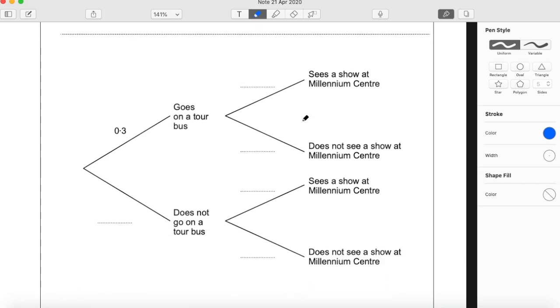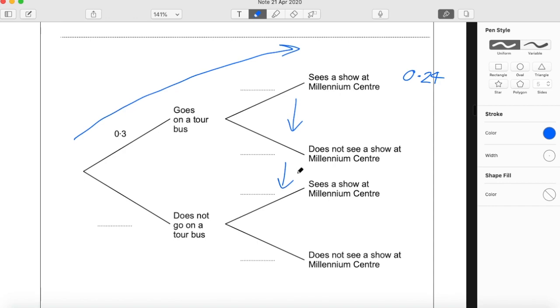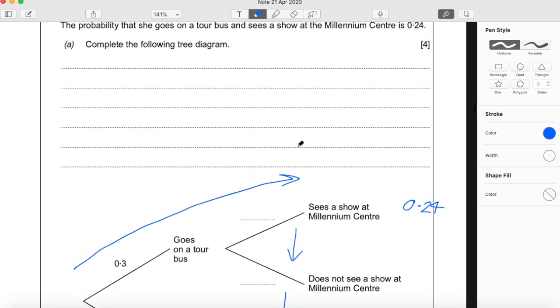So we're given this tree diagram down here. We're told that the probability of her going on a tour bus and seeing a show at the Millennium Centre is 0.24. Remember, we multiply down the tree or through the branches of the tree and we add vertically along. So I'll just show what I mean by that here. So 0.3 times by some number x, which is the independent event of her seeing a show at the Millennium Centre, equals 0.24.